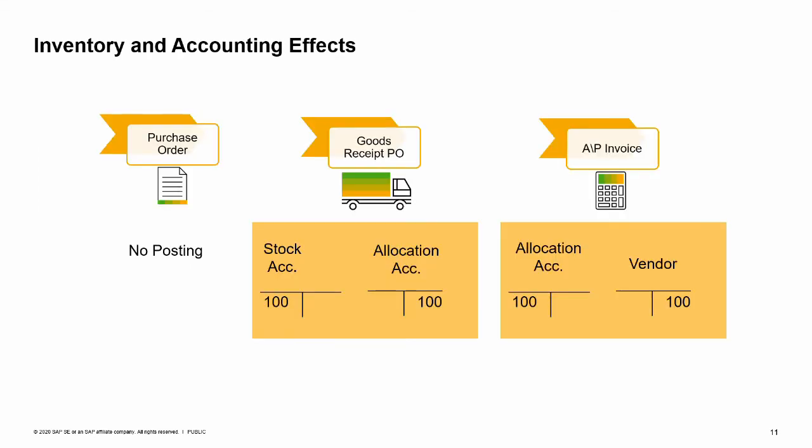Now let us take a look at the procurement process and its effect on inventory and accounting. When a purchase order is created, there are no postings in inventory and accounting. The first posting will be made when a goods receipt PO is entered.